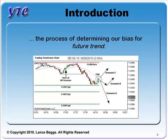That area is the process of determining our bias for future trend direction — our expectation for the path of least resistance, or where price is likely to go next. Having analysed the price action from the start of the UK session, we rallied to hit resistance, came back to support at the swing low, broke to a downtrend, and bounced with a three-swing retracement off support. How exactly do we determine the likely future direction?